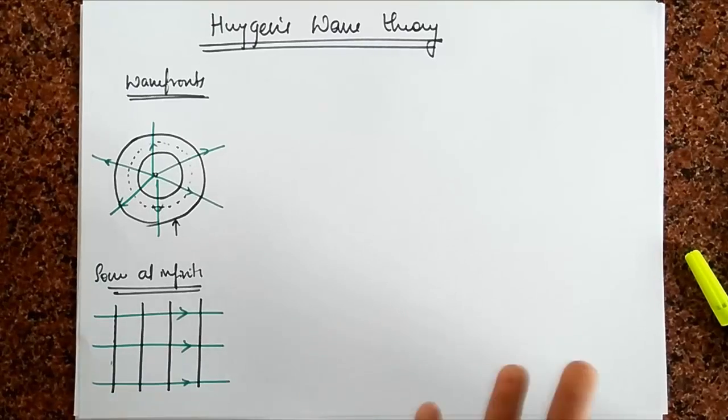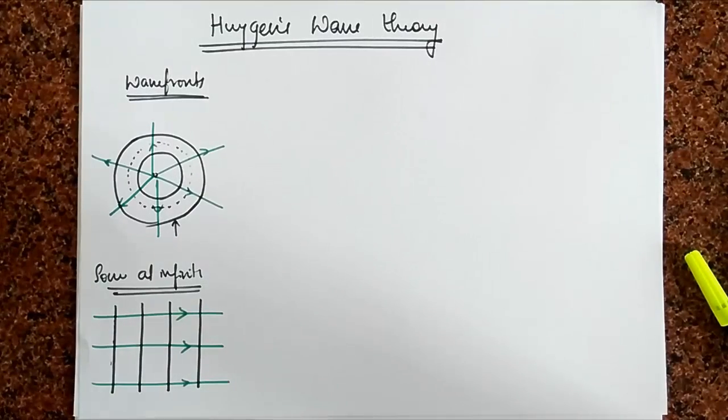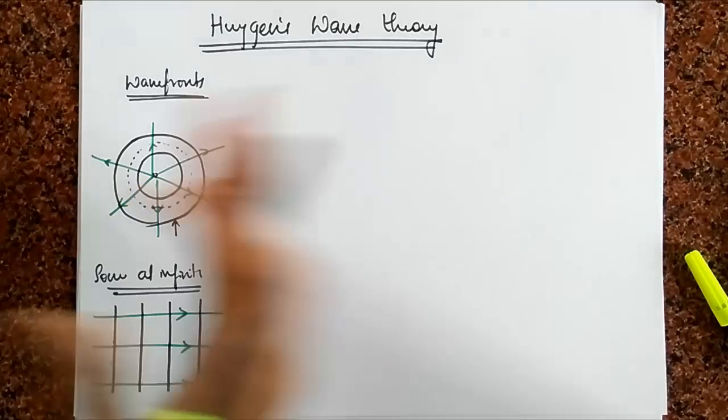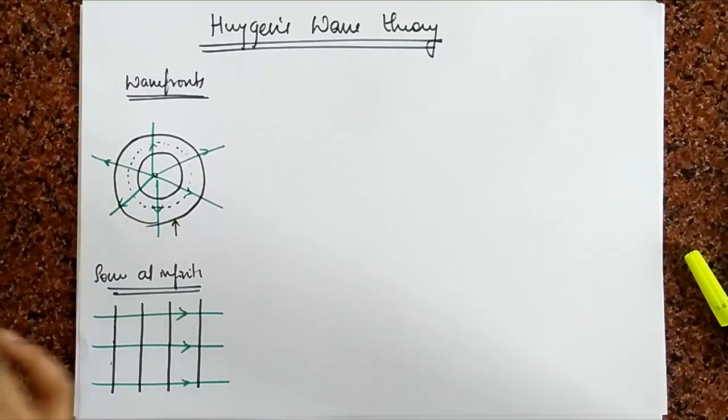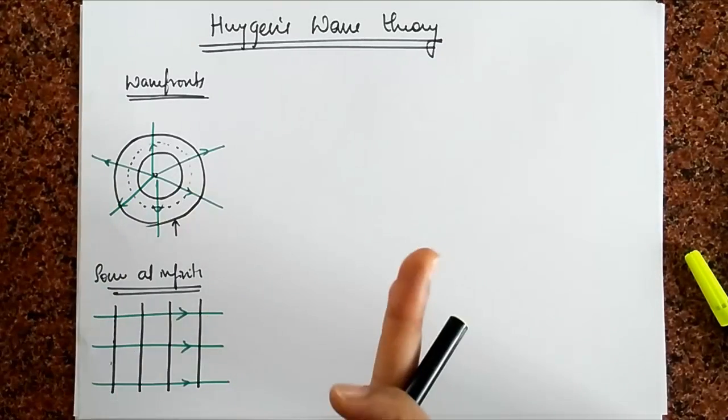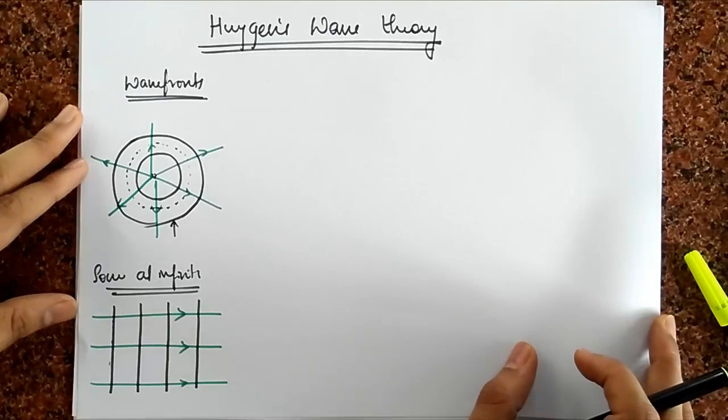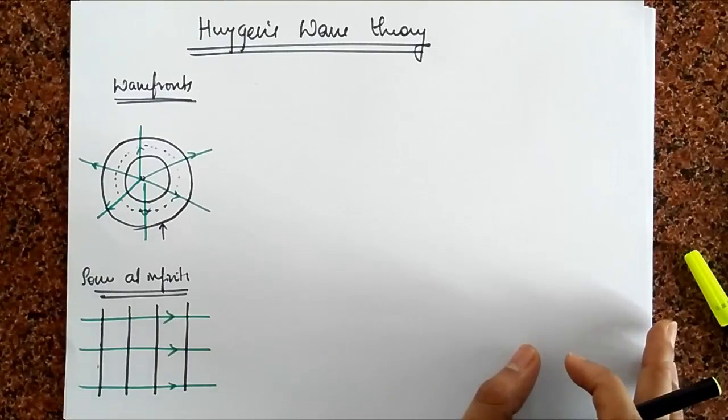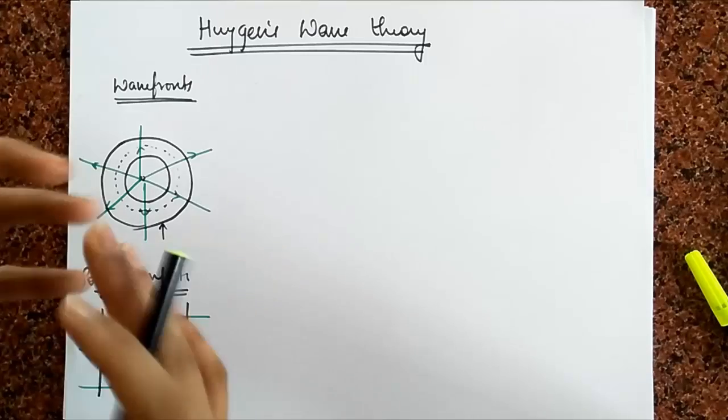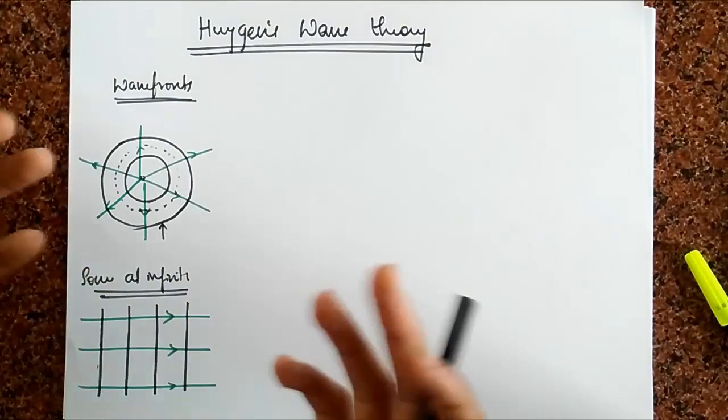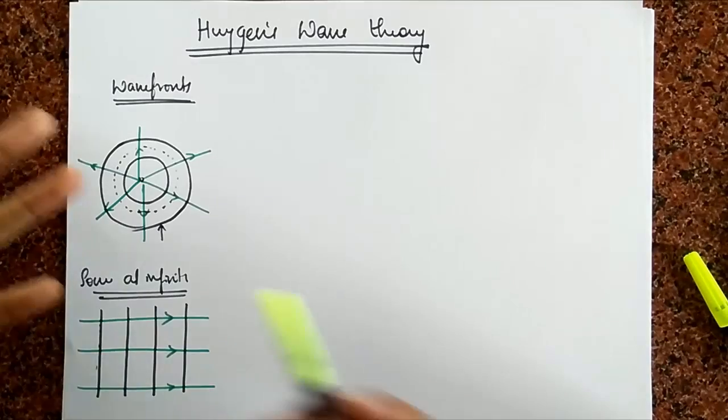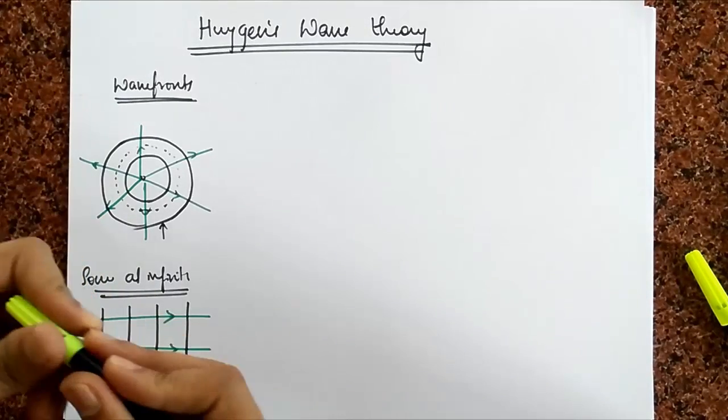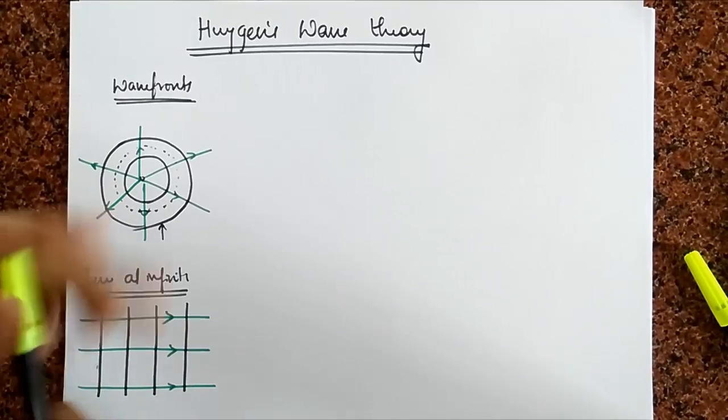So, got the basics of wave fronts. Point sources give spherical wave fronts, sources at infinity give you plane wave fronts. Now, what Huygens theory says is he explains how these wave fronts are formed. He comes up with a sort of an idea. I don't know whether that's a great idea, that's a very real idea or not, but it helps, and that's why we're going to study that.